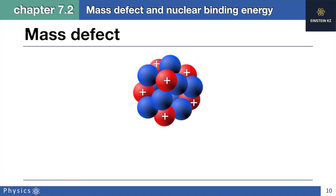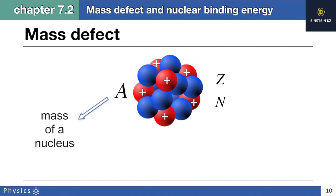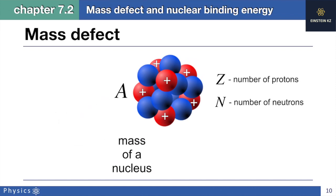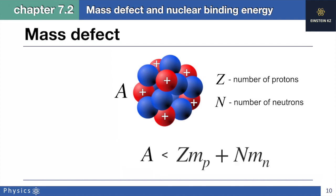Now let's talk about the mass defect. In order to understand it, we need to know three letters: A, Z, and N. Letter A stands for the mass of a nucleus, letter Z stands for number of protons, and letter N stands for number of neutrons. If we think logically, we might predict that the mass of a nucleus and the total mass of all nucleons are equal. But as experiments show, the total mass of all nucleons is greater than the mass of the nucleus, meaning A is smaller than Z times Mp plus N times Mn.